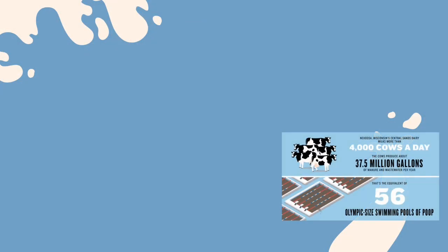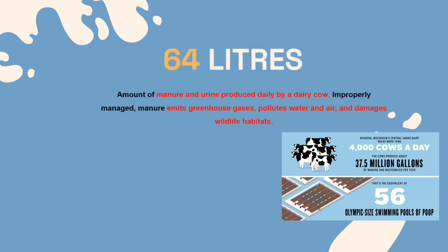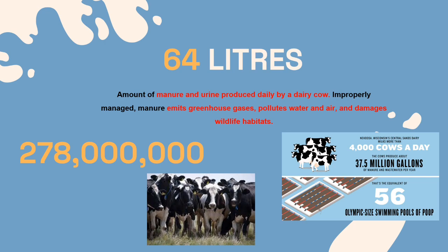A dairy cow produces a total of 17 gallons of manure and urine daily. Improperly managed, manure emits greenhouse gases, pollutes water and air, and damages wildlife habitats. Properly managed, it can fertilize crops and produce energy. There are an estimated 278 million total dairy cows in the world.